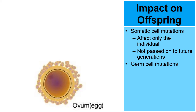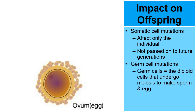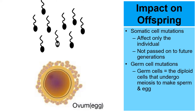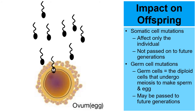What about germ cell mutations? A germ cell in this context refers to the diploid cells that undergo meiosis to make sperm in men and eggs in women — not bacteria or viruses. If these are mutated, the mutation can be passed on. For example, if a mutated sperm cell were to fertilize an egg cell, that mutation could be passed on to future generations.